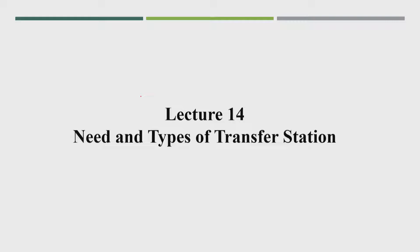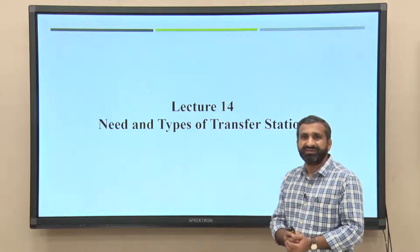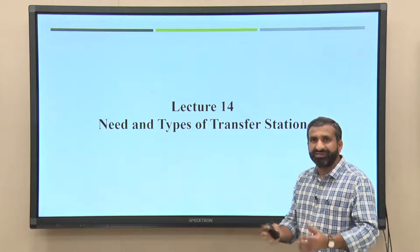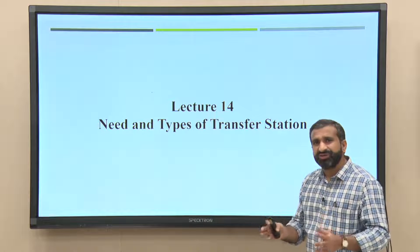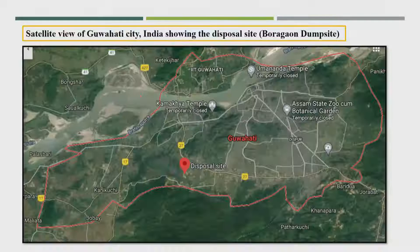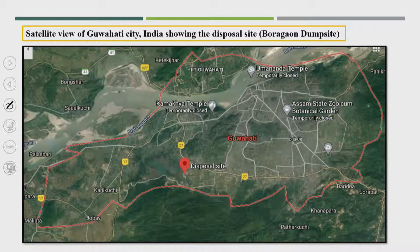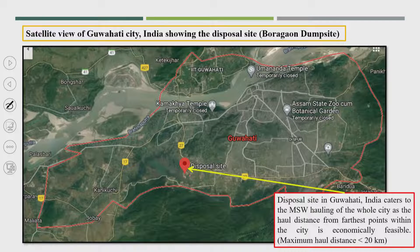Today's lecture will cover the need and types of transfer stations — what exactly transfer stations are, their need and benefits, and the different types. As an example, I will show a Google map of Guwahati city, where the disposal site is visible. The maximum hall distance from the entire city to this disposal site is less than 20 kilometers.